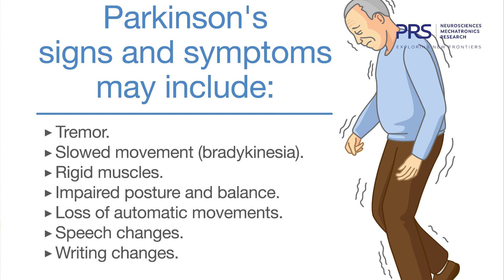Now for the autonomic symptoms. There are four main categories: cardiovascular system involvement causing orthostatic hypotension; gastrointestinal system causing constipation; urinary dysfunctions and sexual dysfunctions such as erectile dysfunction; and thermoregulation issues — patients often experience excessive sweating, which we call hyperhidrosis. These are the autonomic changes seen in Parkinson's disease.